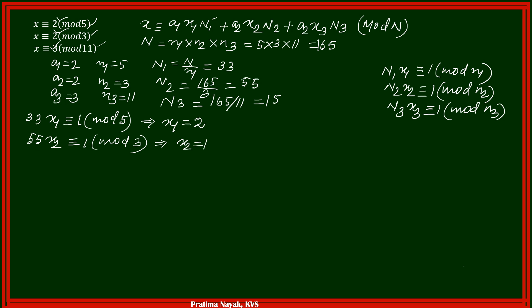Next, coming to x3, N3, N3 is equal to 15, 15x3 is congruent to 1, modulo 11. So think of x3. Number 15 into 1, 15 does not leave remainder 1 when divides with 11. 15 multiplies 2, 30. 30 does not leave remainder 1 when divides with 11. 15, 3 times 45. 45 when divides with 11, 11, 4 times 44, so it leaves remainder 1. That means x3 is equal to 3.